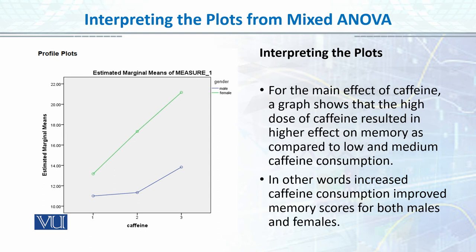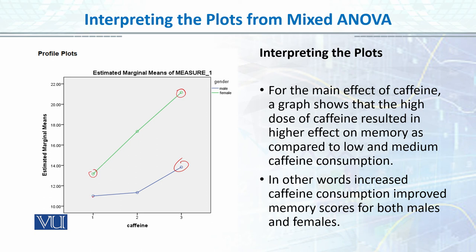The main effect of caffeine: the graph shows that a high dose of caffeine resulted in a higher effect on memory as compared to low and medium caffeine consumption. You can see that the high dose of caffeine has a greater effect on memory whether the participant is male or female. In other words, increased caffeine consumption improved memory scores for both males and females. If high scores indicate better memory, then increased caffeine is associated with better memory performance as scores increase compared to low dosage.